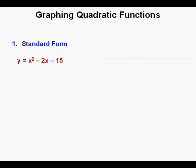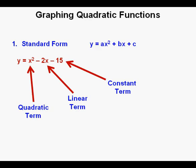Now we'll graph this first quadratic function in standard or general form, y equals x squared minus 2x minus 15. The standard form of a quadratic function is written as y equals ax squared plus bx plus c, where a is the leading coefficient of the quadratic term, b is the coefficient of the linear term, and c is the constant term, or the number all by itself.